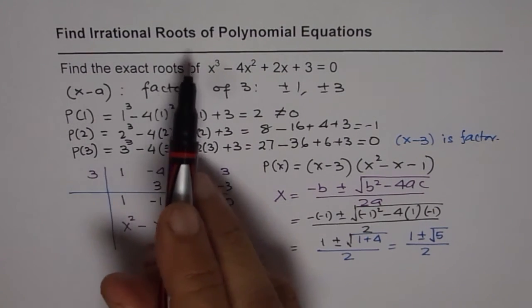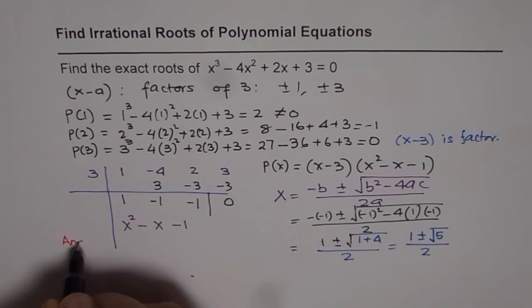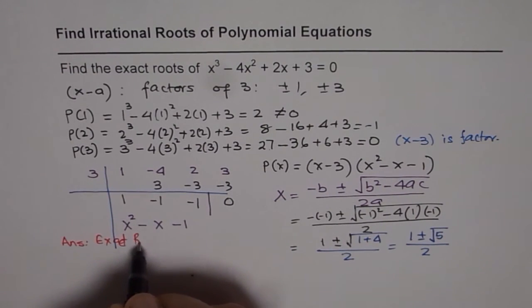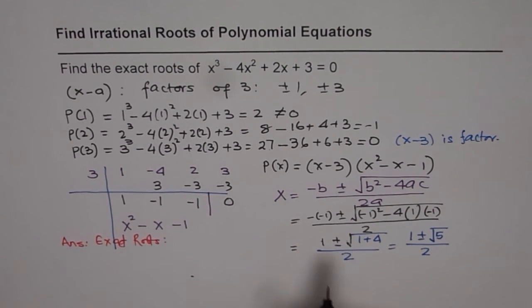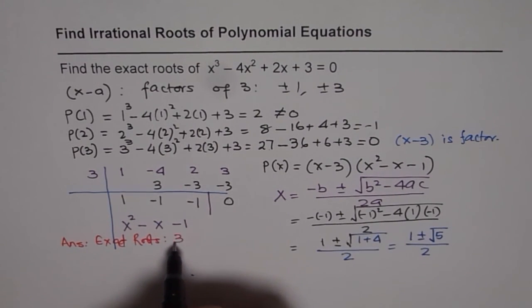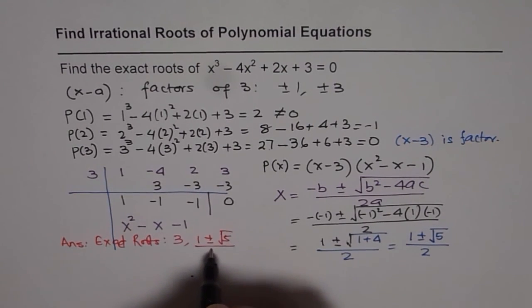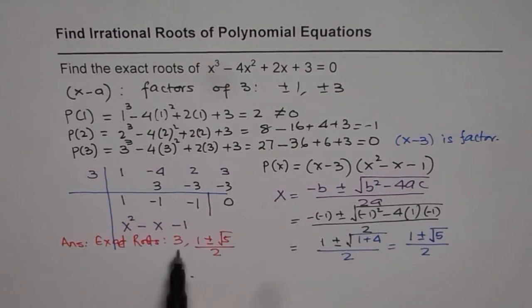Now we have the solution. The exact roots are: first one we found is 3, which makes this equation 0. The other ones are (1 ± √5) / 2. So this cubic equation has 3 different roots. That is how we can solve a polynomial equation.